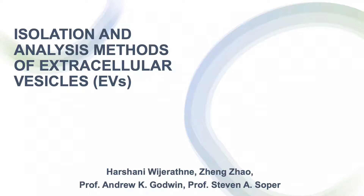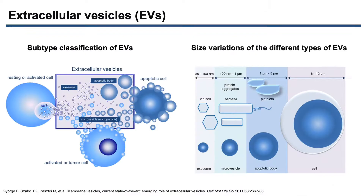Isolation and Analysis Methods of Extracellular Vesicles. Biological cells release vesicles of varying sizes. These vesicles are known by different names, including microvesicles, exosomes, and apoptotic bodies, which are collectively called EVs. The particular subtype classification of EVs is based on their cellular origin and biogenesis.